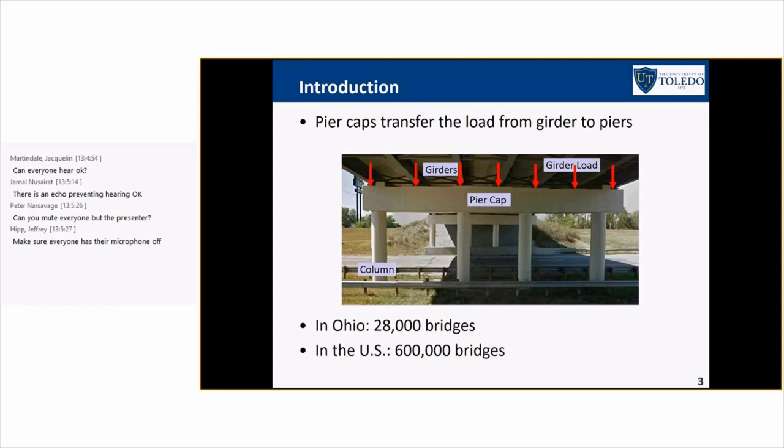For that reason, these types of elements are typically deep. Only in Ohio, we have about 28,000 bridges. And if you consider multiple pier caps for every bridge, you end up with 600,000 pier caps. And if you extrapolate this to the nation, you end up with one to two million pier caps easily. So that's a really large number.